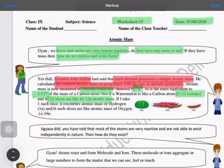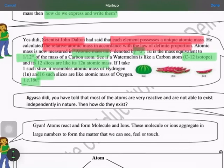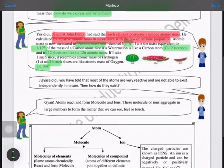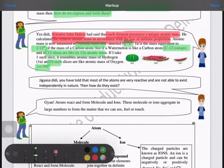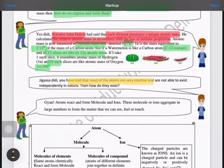If I take one such slice, it resembles the atomic mass of hydrogen, and 16 such slices resemble the atomic mass of oxygen. You have to remember that we have taken carbon as a reference value here, but before carbon it was tried with oxygen. However, we were not able to explain everything, so we switched over to carbon.